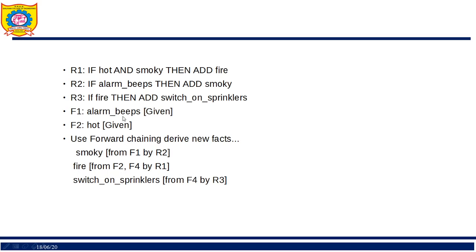Using fire with Rule 3, we derive the action: switch on sprinklers. The three new facts generated by forward chaining are: smoky, fire, and switch on sprinklers.